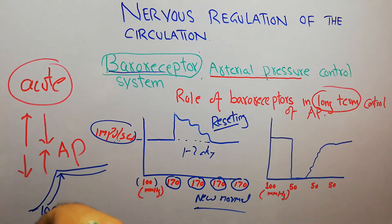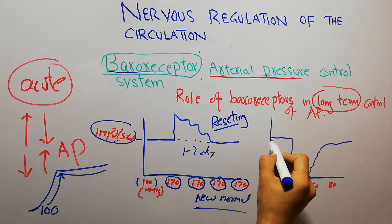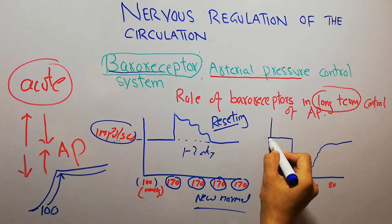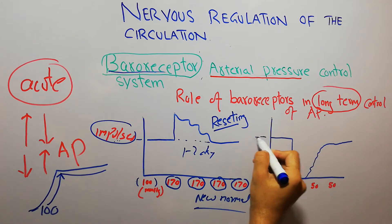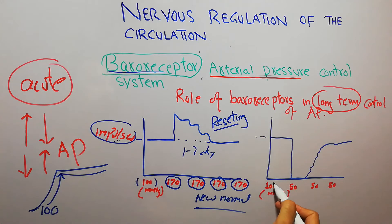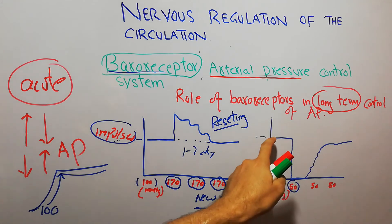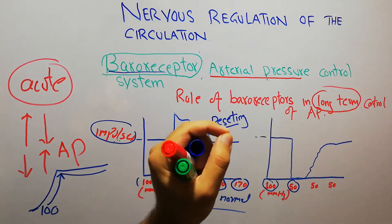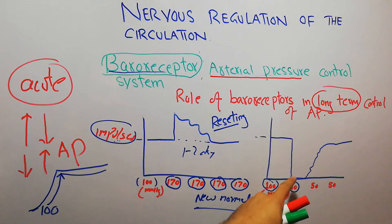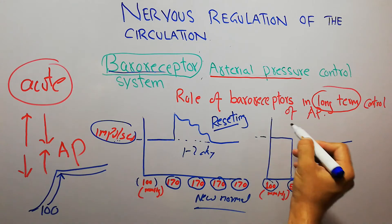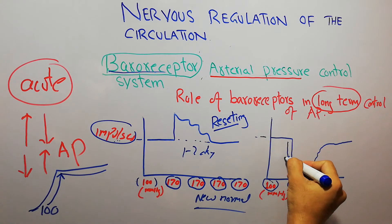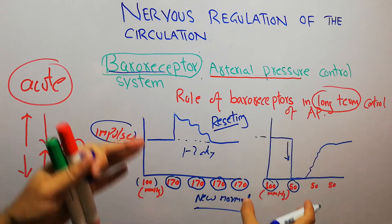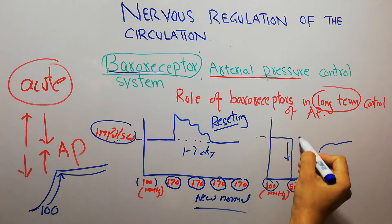This same thing is true for low arterial pressure as well. This graph shows that the number of impulses are being transmitted to the brain at a normal level. Suddenly the arterial pressure has decreased to 50 mmHg. At the normal arterial pressure the impulses were being transmitted at a normal level. As soon as the arterial pressure decreased, the impulses to the brain also decreased. These decreased impulses are basically trying to increase the arterial pressure.